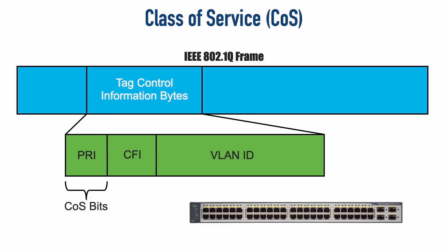In our previous video, we discussed Cisco's recommendation that we mark traffic as close to the source as possible. That way, the next router or the next switch can very quickly and very efficiently look at that marking and make a decision based on that marking. In this video, we're going to consider some of those different markings — marking at layer 2 and marking at layer 3. First up, let's consider marking at layer 2.